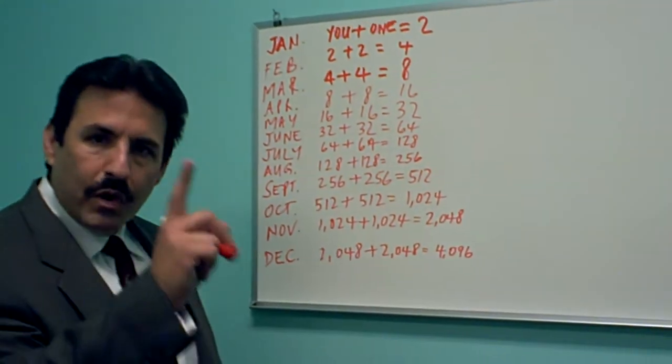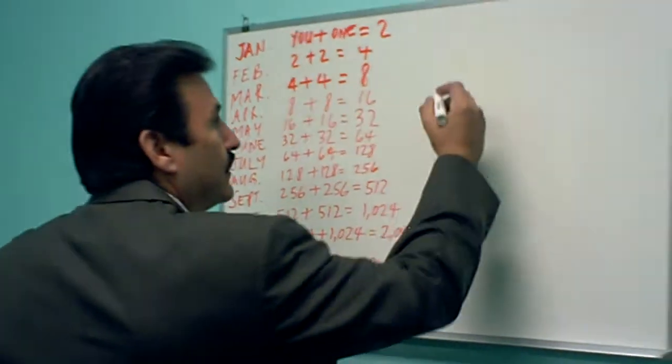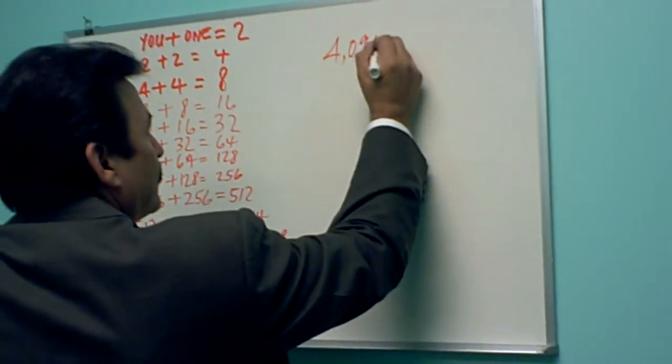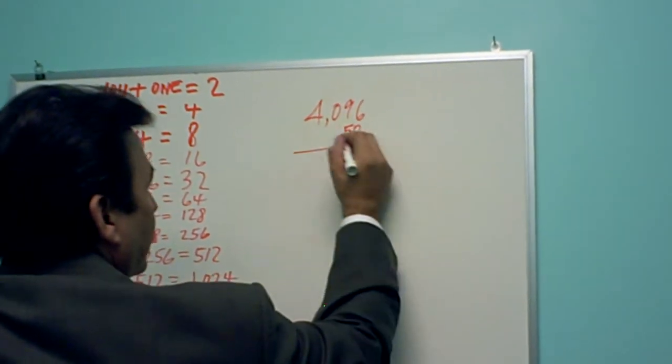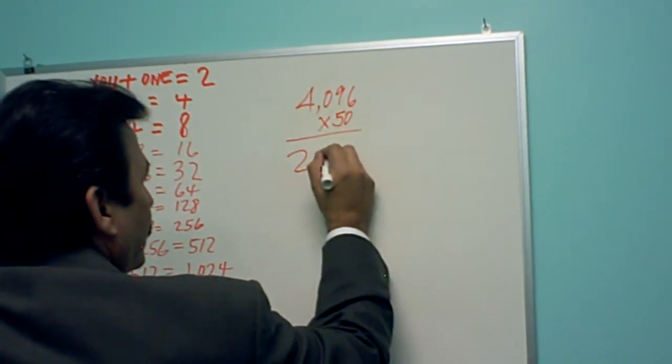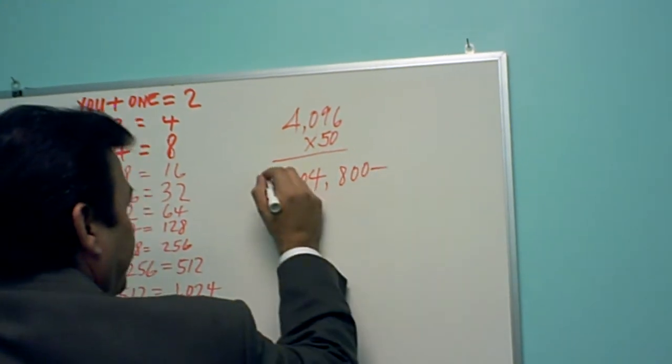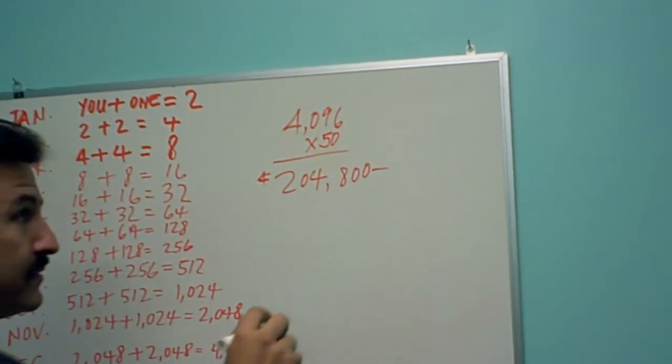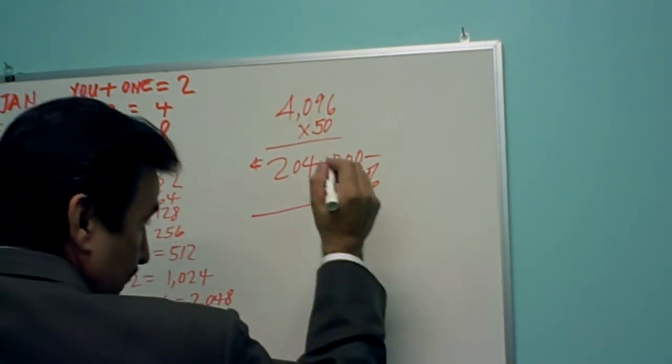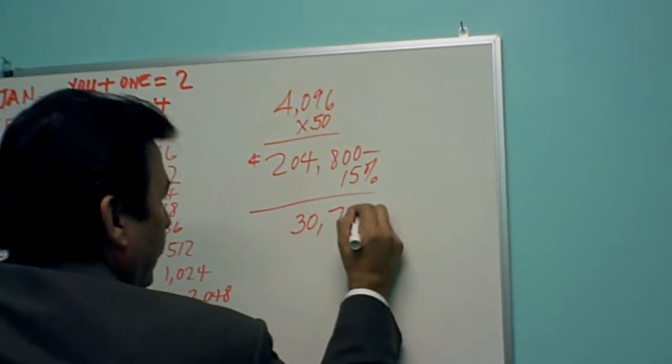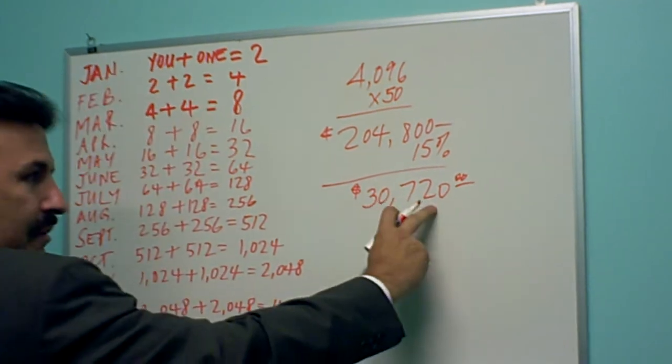This is by bringing in only one person per month and teaching that person to do the same thing. This is what happens when we have 4,096 distributors. Now 4,096 distributors who are spending $50 in product per month, that's going to equal a total of $204,800. The company is going to pay you at this point 15% commission which comes to $30,720.